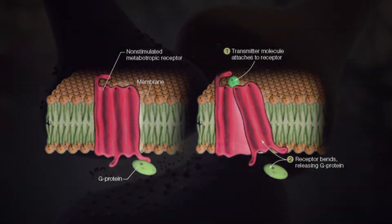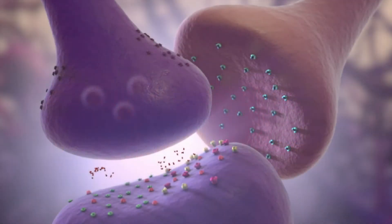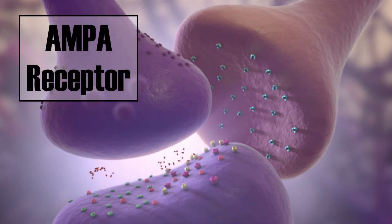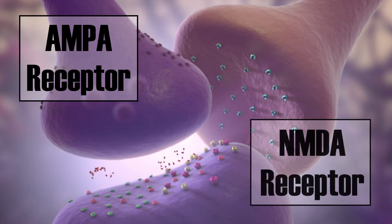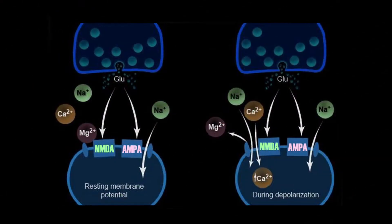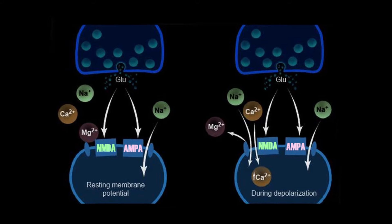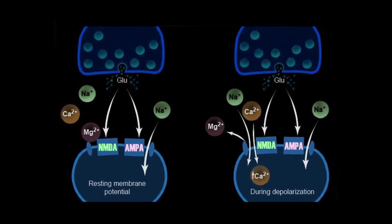When looking in more detail, ionotropic receptors can be further divided into various kinds, for example AMPA and NMDA receptors. Activation of AMPA receptors results in an influx of sodium and potassium. In NMDA receptors however, there is an additional influx of calcium.